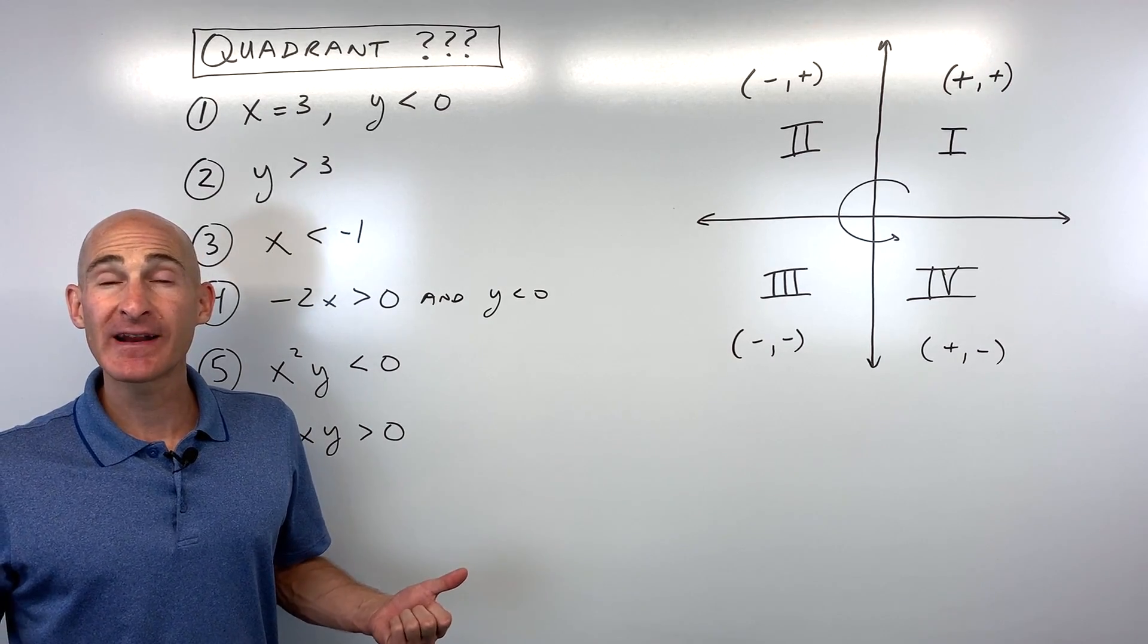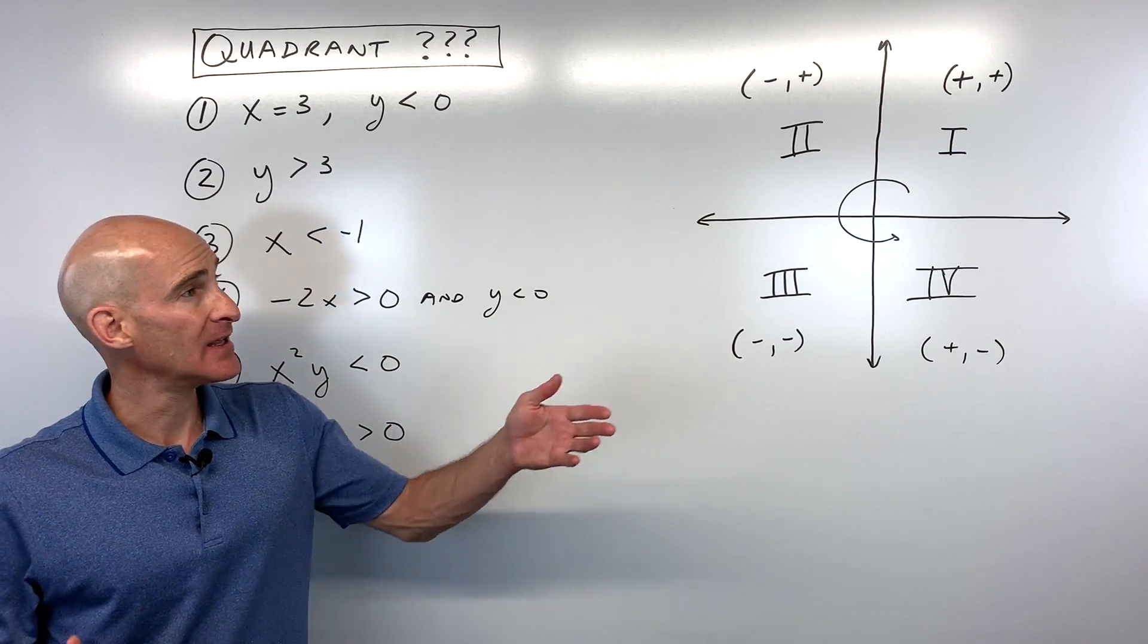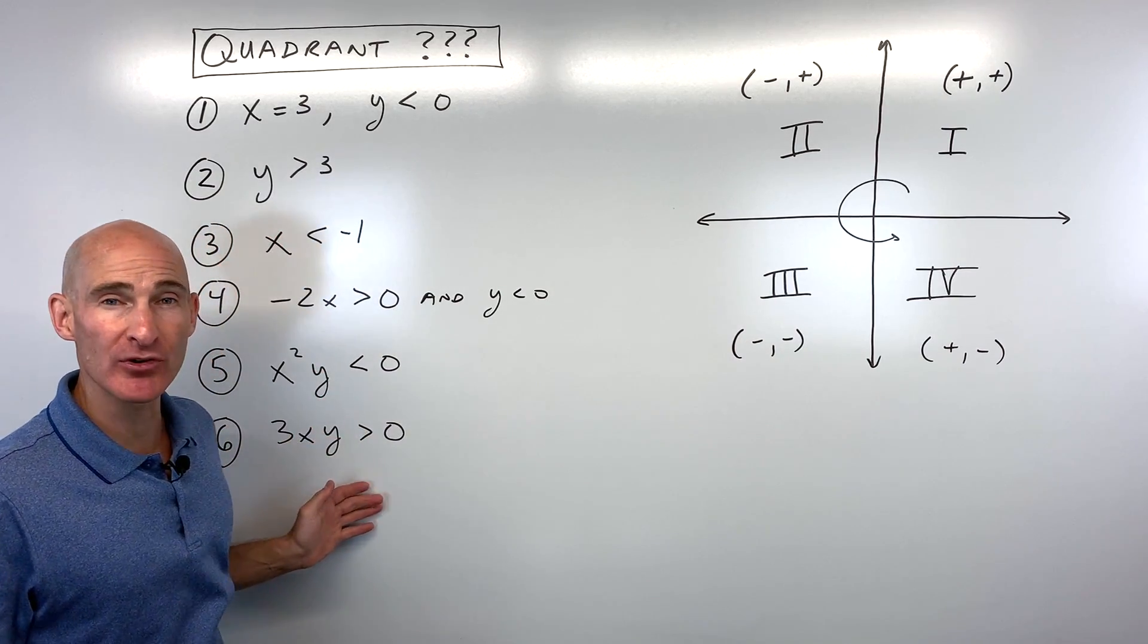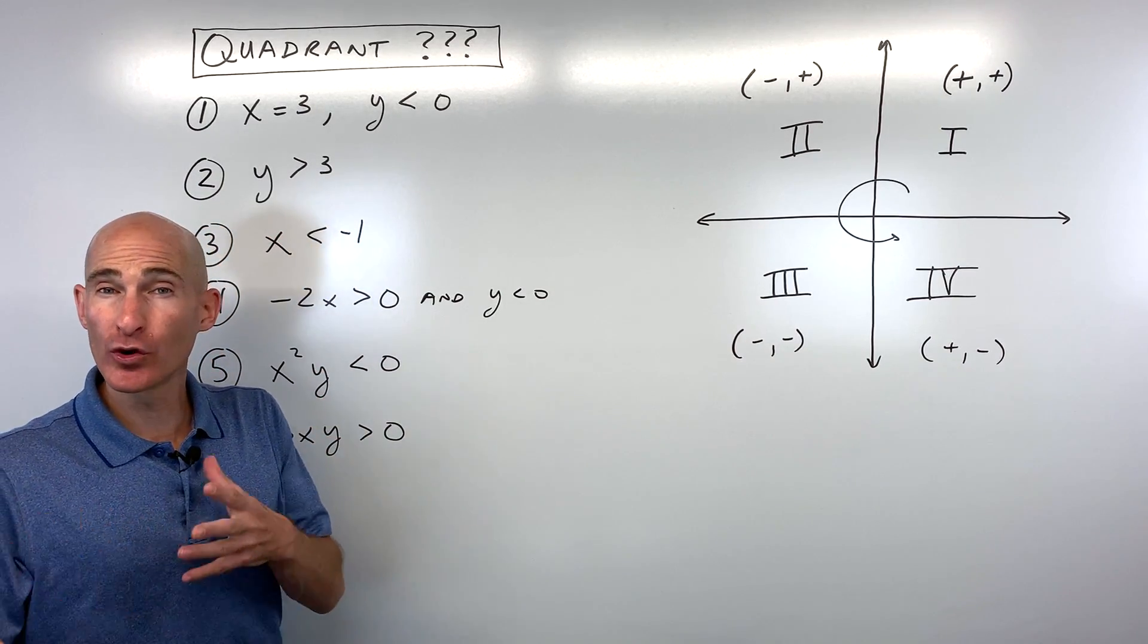In this video, we're going to talk about how to find out where a point is located in which quadrant given some restrictions. We're going to go through six examples, see if you can do these on your own, and we'll go through them together.